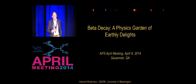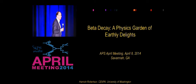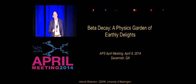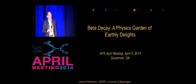We'll go ahead and start the third plenary session of the meeting on the 100 years of beta decay. It was actually 100 years ago in 1914 that James Chadwick, working in Hans Geiger's laboratory, published the results showing the continuous beta spectrum. And since that time, of course, there have been an enormous number of very interesting discoveries using beta decay.